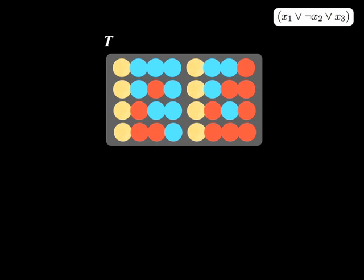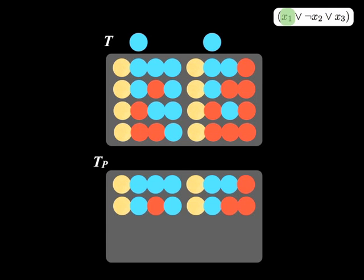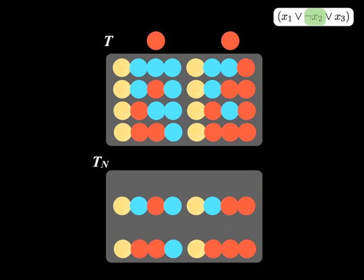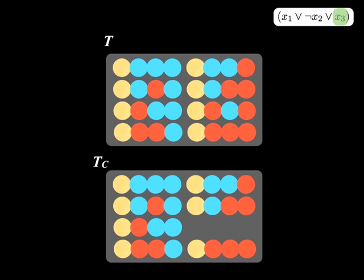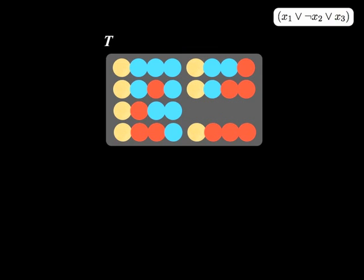Let's observe Lipton's algorithm filtering a clause. Lipton's algorithm collects witnesses for each literal by extracting sequences from a combinatorial space of ovulinucleotides. Witnesses for each clause get stored in the tube T sub C.